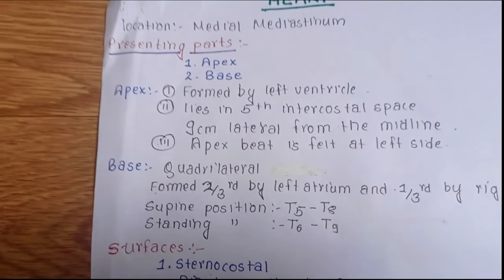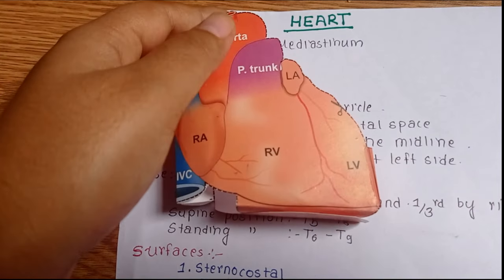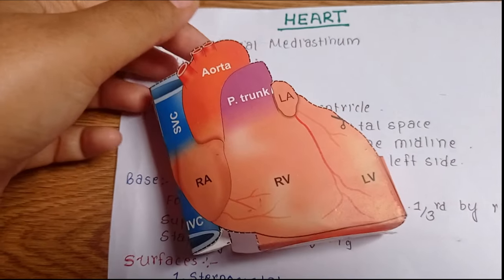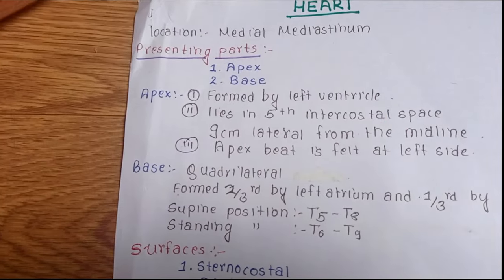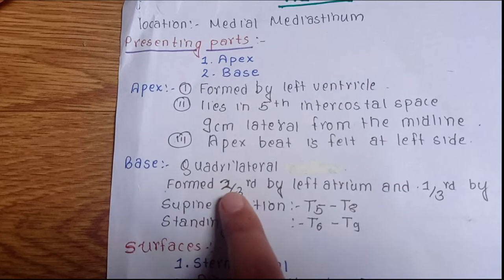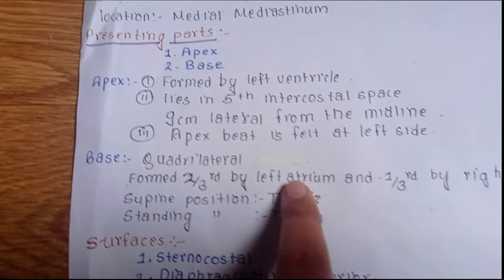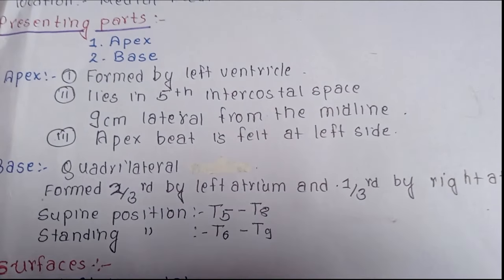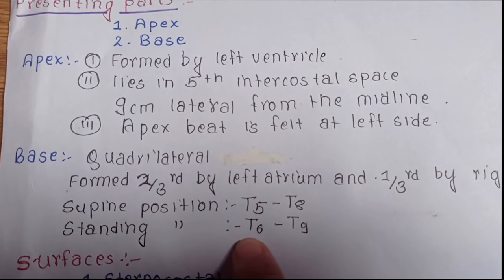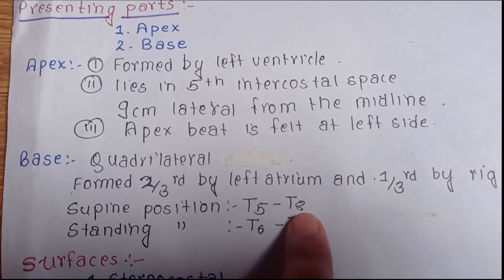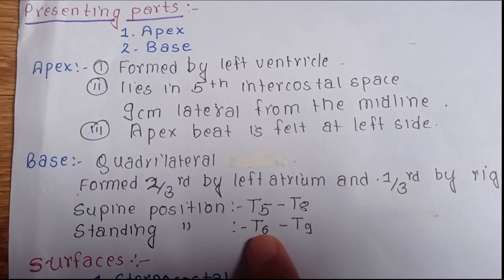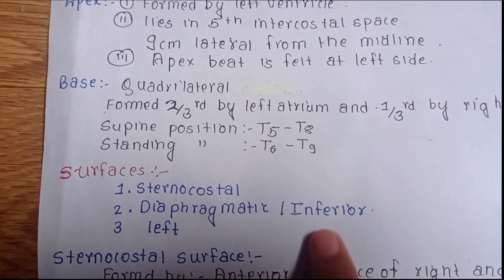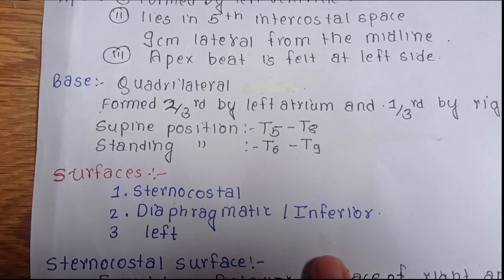Now talking about the base — it is quadrilateral in shape, as we can see here. The apex is this one and the base is this one. The base is formed two-thirds by the left atrium and one-third by the right atrium. Regarding its position, during the supine position it lies at T5 to T8, while standing it lies at T6 to T9.